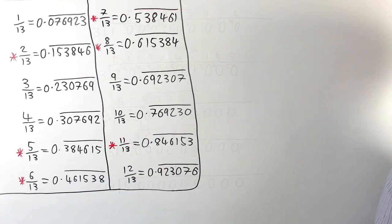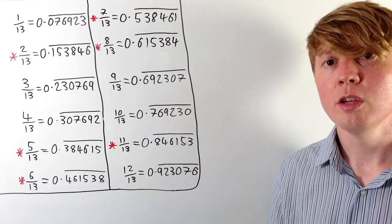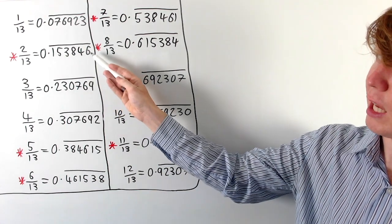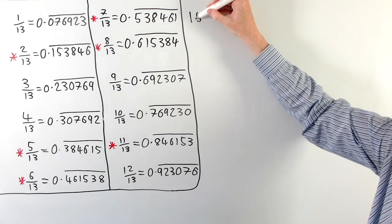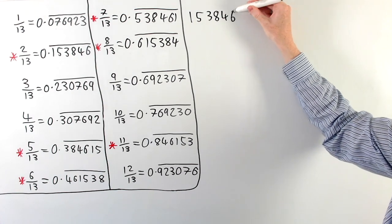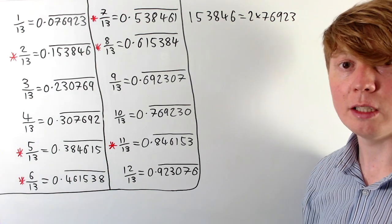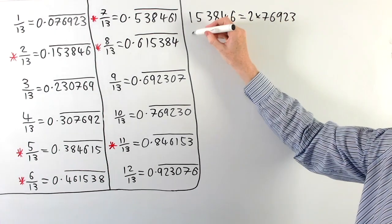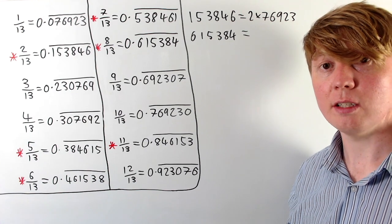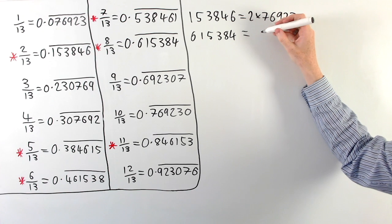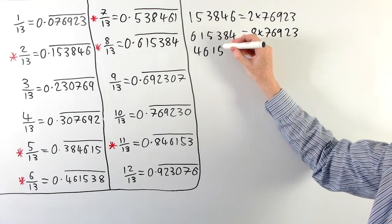Just as we worked with sevenths, we can use the insight that 2/13 is twice as big as 1/13, which tells us that the decimal part 153846 is going to be twice as big as the recurring decimal part for 1/13. So this is telling us that 153846 is twice as big as 76923. If we go through these and put the 6 to the front — giving us 615384 — this was 8/13. So this number is 8 times 76923.